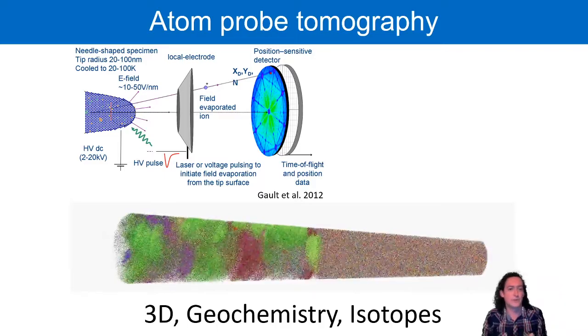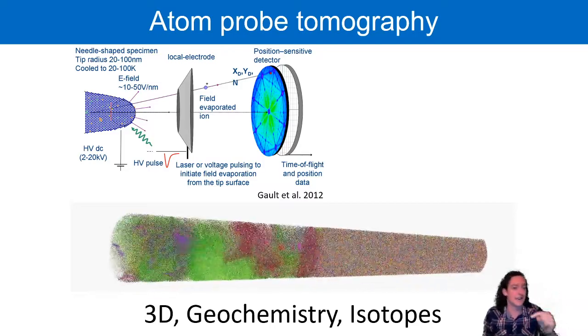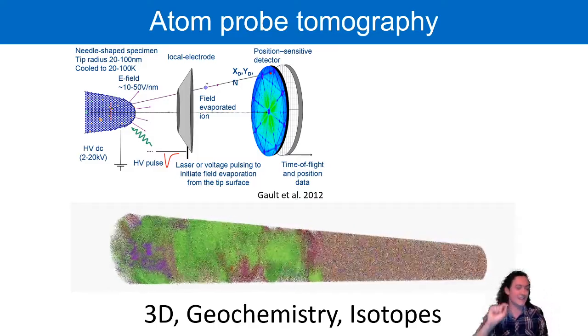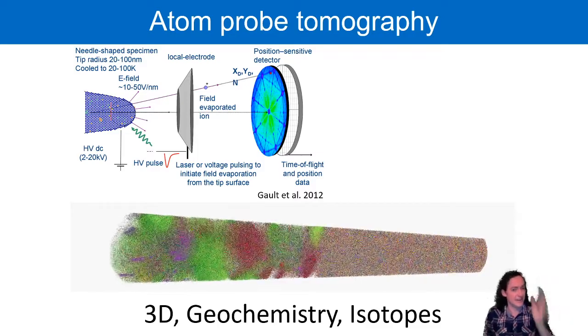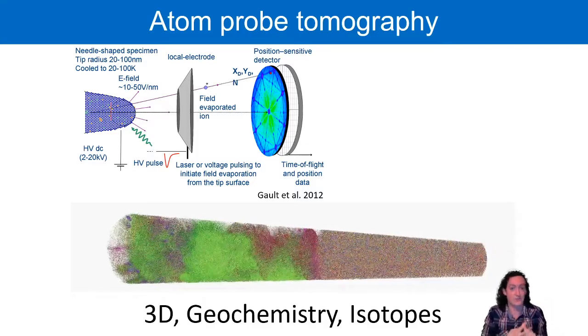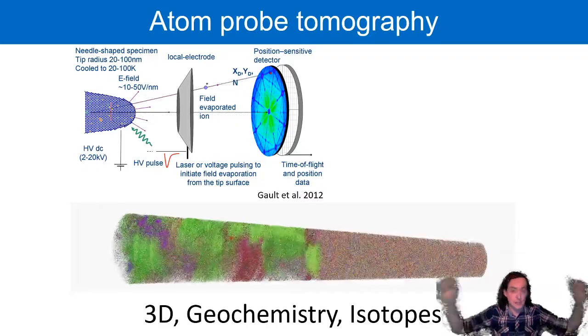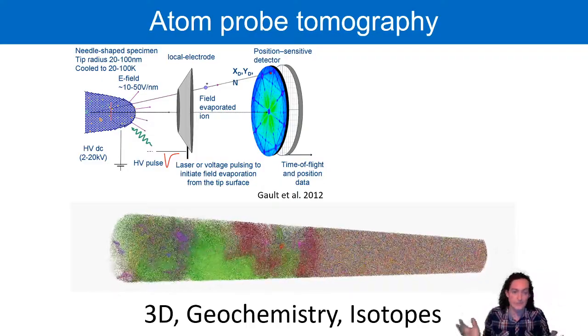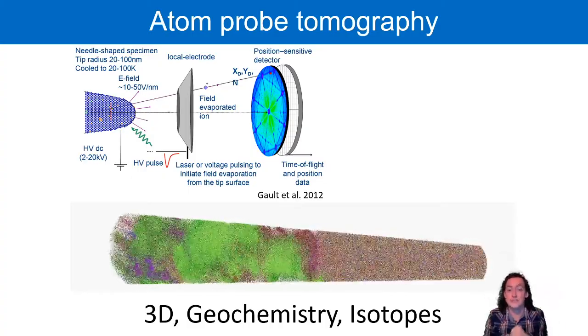If you haven't heard of atom probe tomography before, it is a relatively new technique in planetary science, but it's been around in material science for ages. Essentially, you put a very fine needle in an ultra-high vacuum at high voltage, fire a laser at that tip. That gives that sample just enough energy to ionize a single atom. That atom then fires across a potential difference to hit a position-sensitive detector. The time of flight from laser pulse to detection gives you the mass and charge of the atom, which gives you the element and isotope of that atom, which is really awesome and really important. And the position it hits on the detector, you can back out its 3D position within that sample. So you end up with a data set like the one rotating behind me, where each one of those dots is an individual atom.